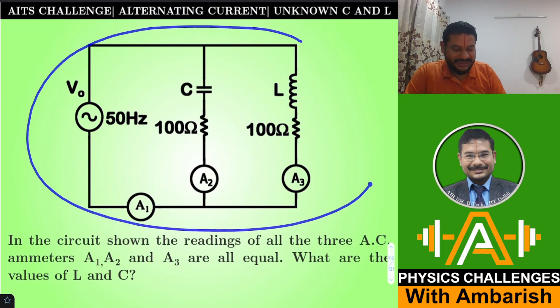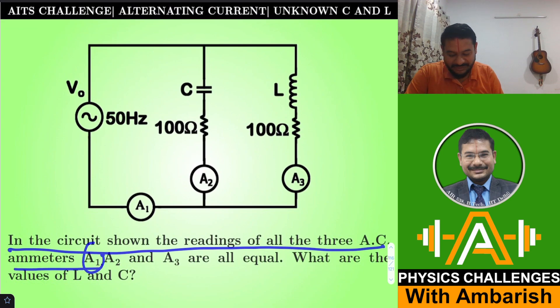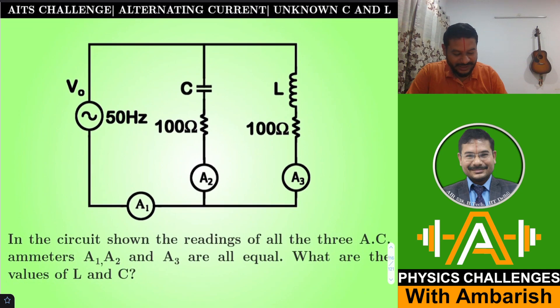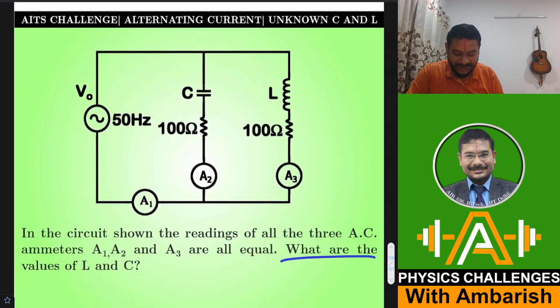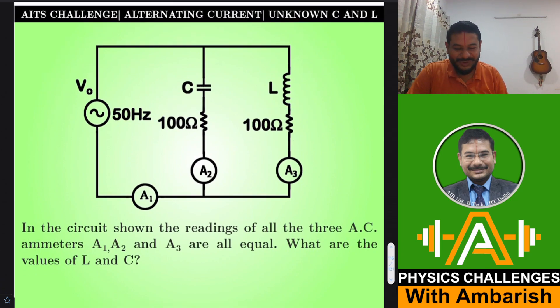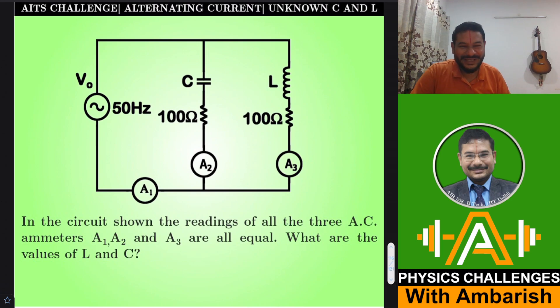We have a circuit over here. In the circuit shown, the readings of all the three AC ammeters A1, A2, and A3 are all equal. So all three readings are equal. That doesn't mean that their phases are identical because AC ammeter just measures the RMS current. So RMS current through all three of them are equal. What are the values of L and C? We have to find out the values of L and C. We are given the values of these resistances as 100 Ohm and 100 Ohm. If you want, you can give it a try. I'll get into my analysis right away.